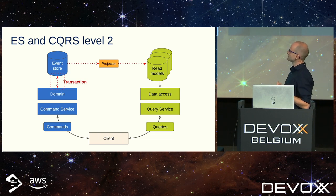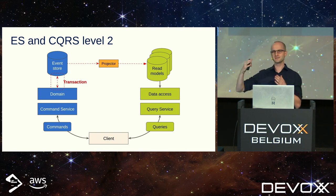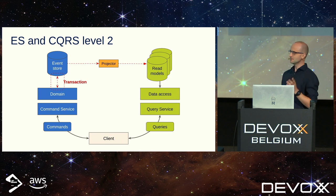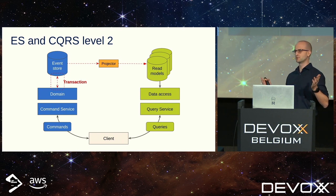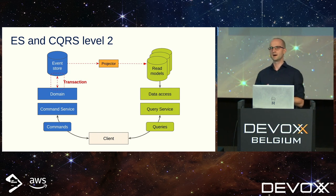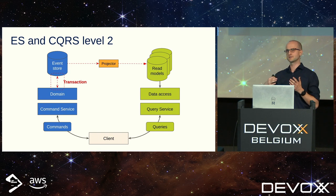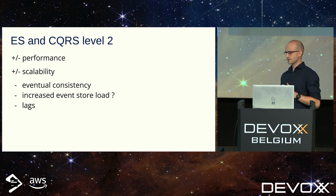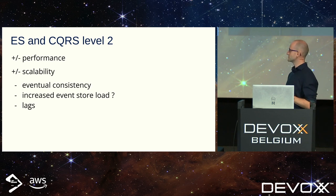Since this level and further we are entering an eventual consistency world, which could materialize in two specific problems. First, if we launch hundreds of projectors, we can accidentally put more pressure on our event store. But there's a second problem: lag. How often should I query my database to check for new events — every three seconds, every one second? I can imagine many systems where an additional second of eventual consistency is simply not acceptable. Quick summary: performance and scalability improved, but eventual consistency increased, events to reload with a question mark, and lag.